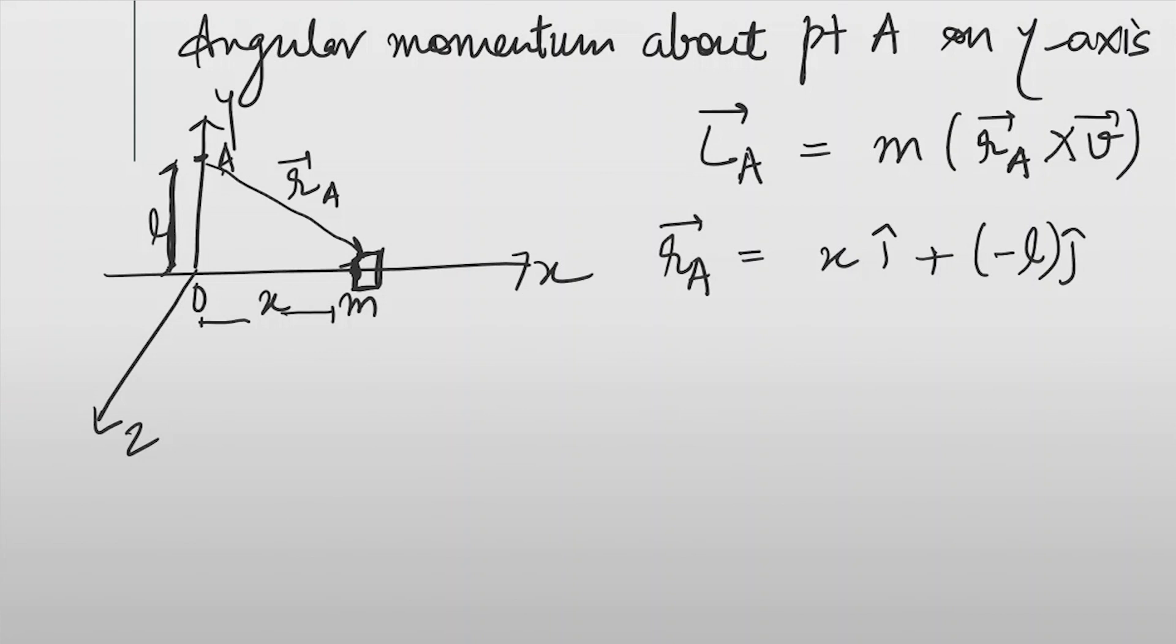We are taking this minus L j cap. Then we are given the V as v i cap. We just have to cross multiply R_A and V.